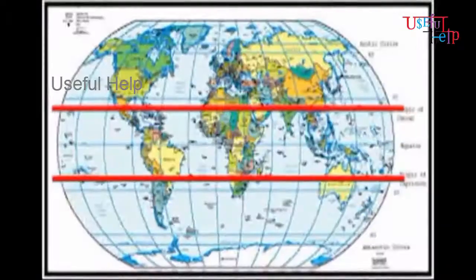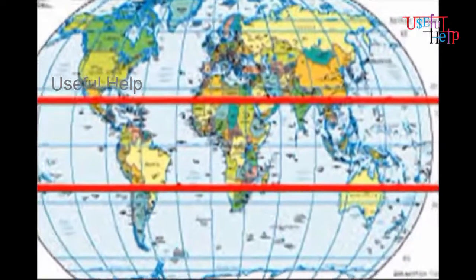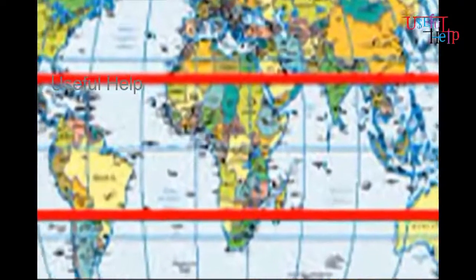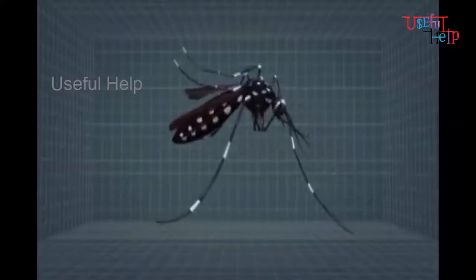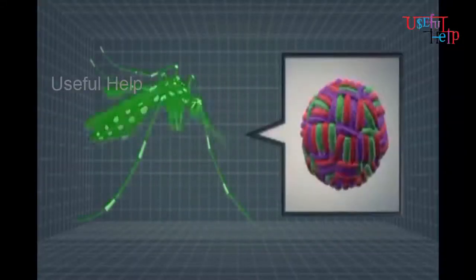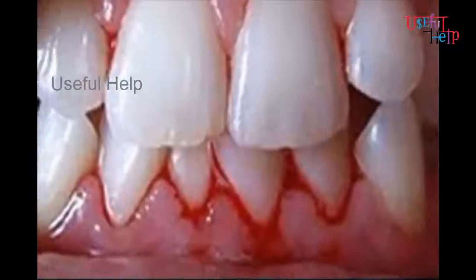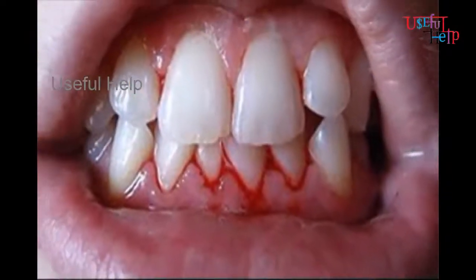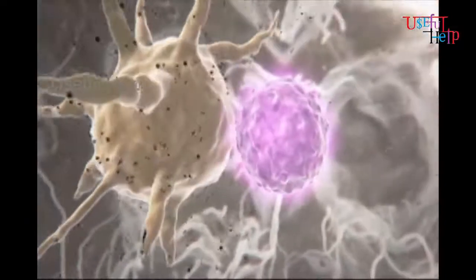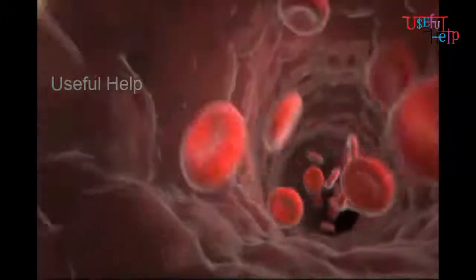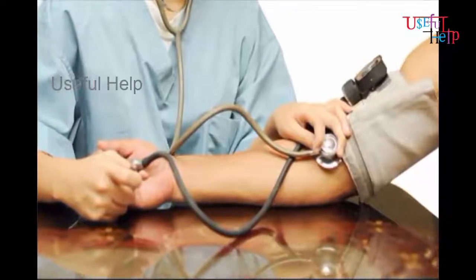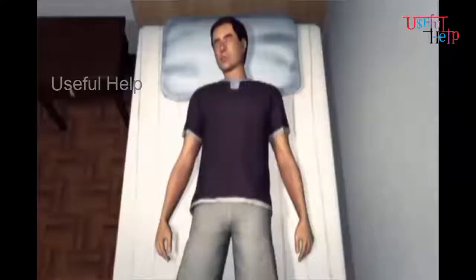Dengue is an infectious tropical disease caused by the dengue virus. It is also transmitted by the same mosquito, Aedes aegypti. This is a life-threatening fever resulting in bleeding, low levels of blood platelets, and blood plasma leakage with low blood pressure.